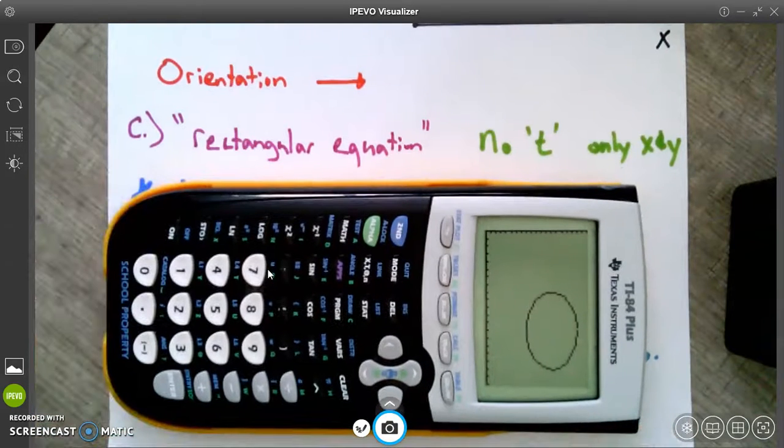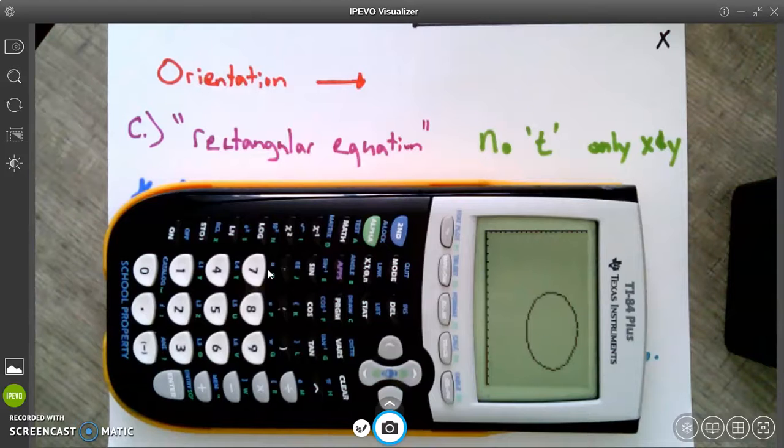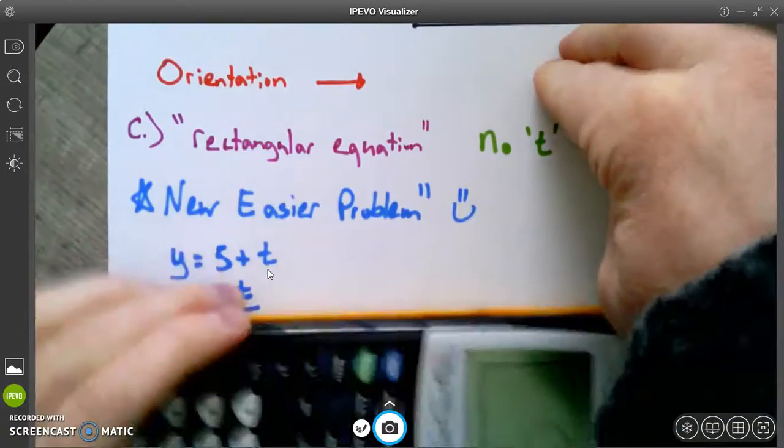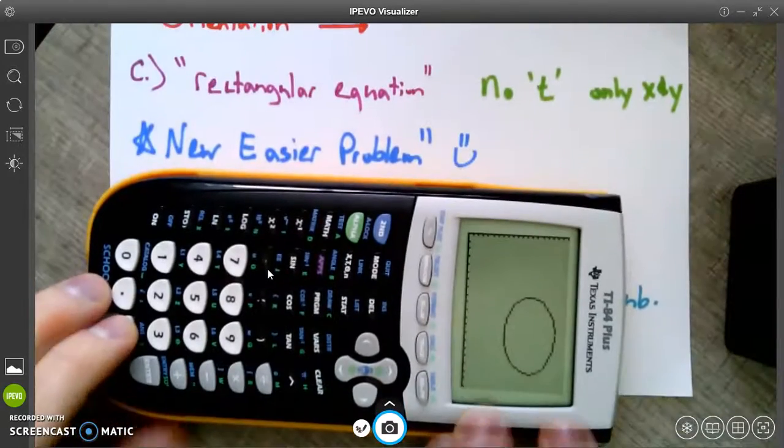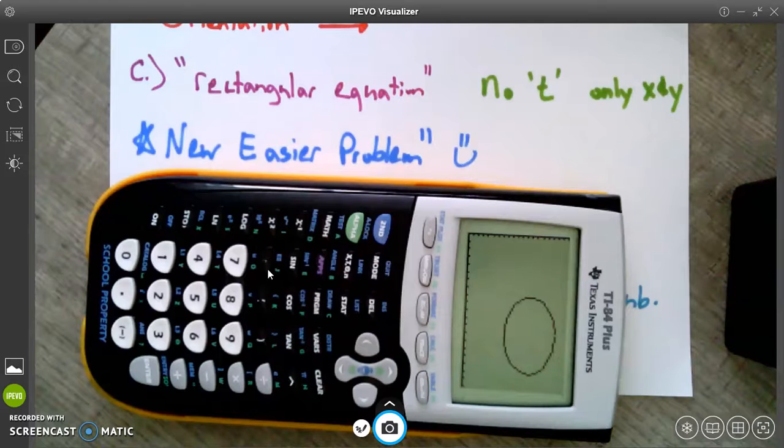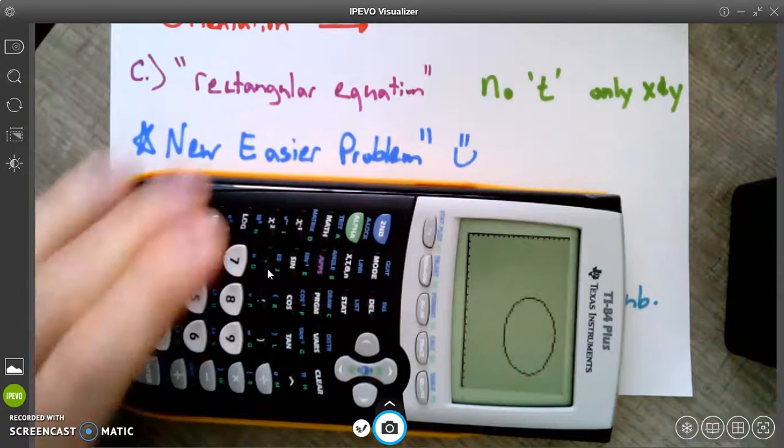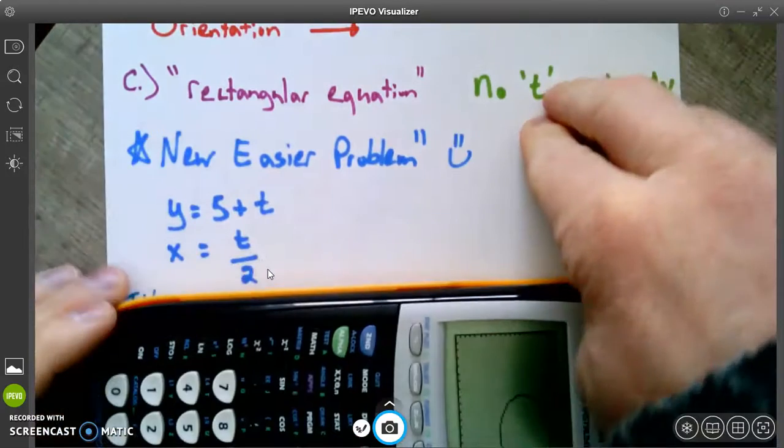Then finally we get this last part, which is part C. Part C is finding the rectangular equation for the parametric equation. So I'm just using my calculator as a blocker here. A rectangular equation just has x's and y's, no t's. t was this new variable time, but there's some rectangular equation out there that will have the exact same graph, and that's what we're looking for. What we're going to do, the one I gave you guys, this orbital motion one, is a little tricky. So I'm going to give you a new, easier problem.